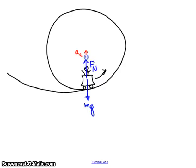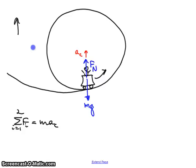Let's solve that problem. I write Newton's second law: the sum of the forces equals MA. Assuming he's traveling with constant velocity, there's no tangential acceleration — the only acceleration is centripetal. There are two forces. The sum from i equals 1 to 2. The normal force is in the direction of the centripetal acceleration, so it's positive.